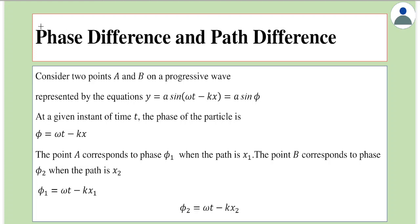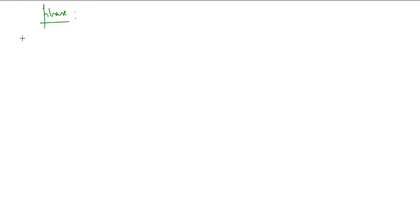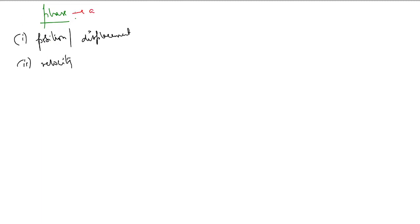Hello everyone. Let's find out an expression for phase difference and path difference. To do this, first let's define what is the phase of a wave. Phase of a particle indicates two things: it indicates a particle's position or displacement, and also it tells about its velocity. So phase, which is basically an angle, tells about the particle's position or displacement and velocity.